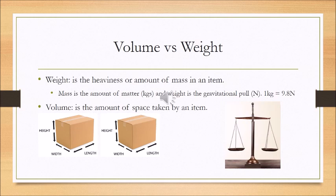These two boxes are the same — height, width, and length are the same. Each side is two feet: two multiplied by two multiplied by two equals eight cubic feet. Volume is the amount of space that an item occupies. But if one box is filled with foam and another with something heavy, the scale shows different readings. The amount of heaviness is the weight. Mass is the amount of matter and weight is the gravitational pull — both units are different. But for the sake of our discussion, let's work in kilograms.